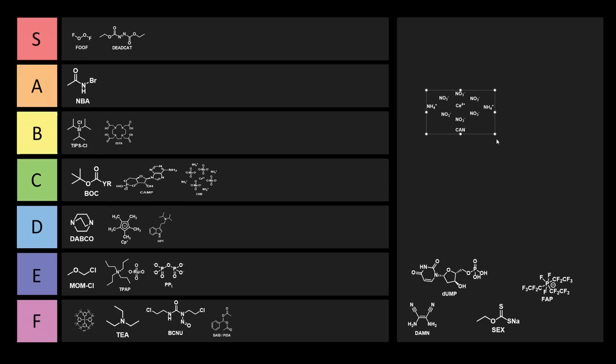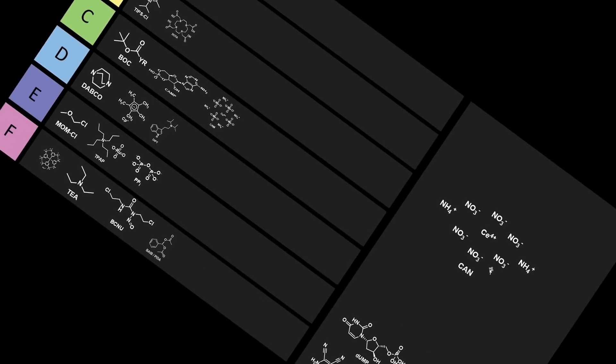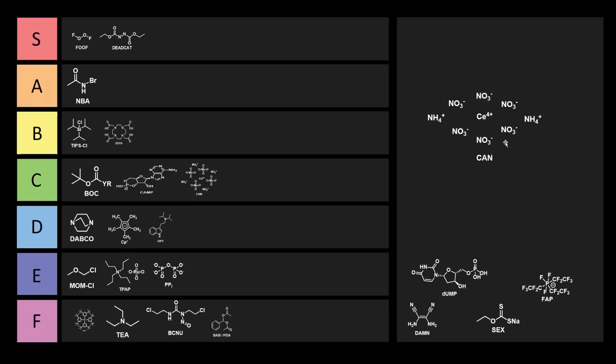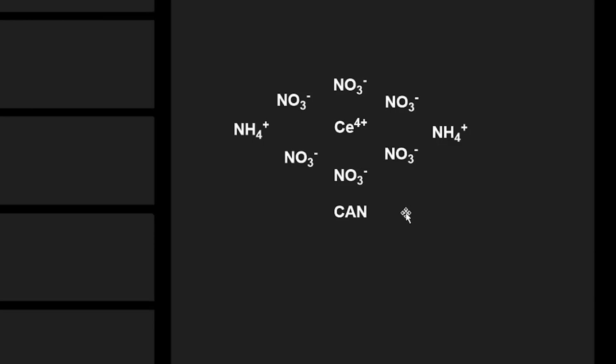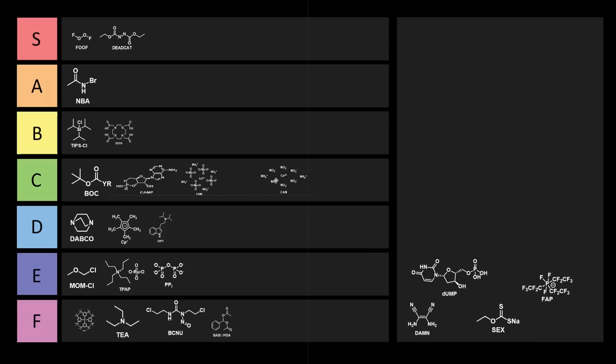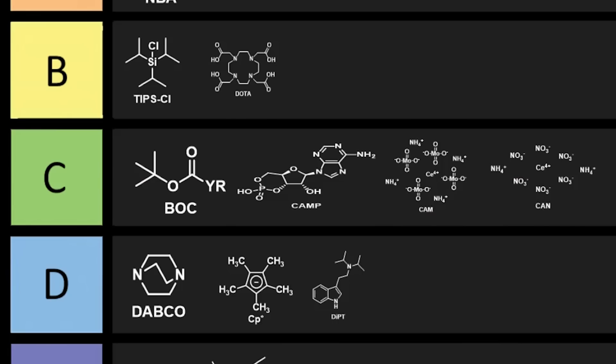Next we have CAN, also known as ceric ammonium nitrate. This is a highly OP oxidant able to do oxidations that would be challenging for more orthodox oxidants, or should I say ortho-doxidants. This even includes CH bonds. Which oxidant will do the job? This one CAN. And this one CAN go right into C tier because it starts with a C.